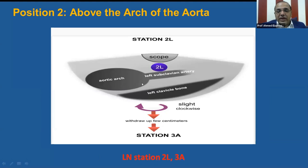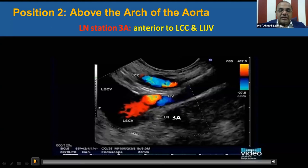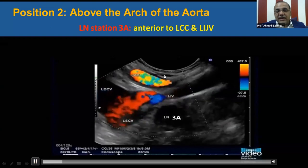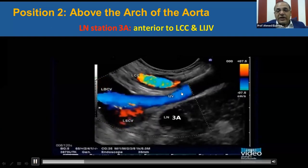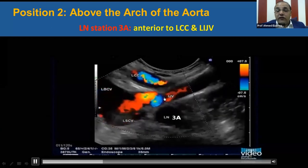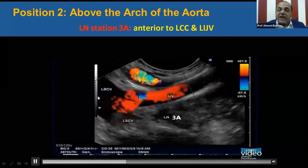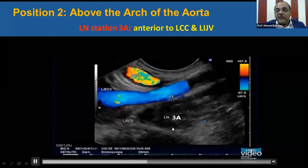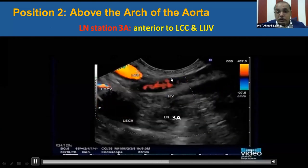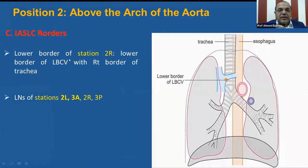With clockwise rotation and withdrawal of the echoscope a few centimeters, we find the left common carotid artery from the left subclavian artery, so we swing from station 2L to station 3A. As seen in this video, this is the left common carotid artery. In front of it is the venous confluence — left internal jugular vein joining the left subclavian vein forming the left brachiocephalic vein — and lymph node station 3A lies in front of the left internal jugular vein and the left common carotid. So position 2 includes lymph node station 2L and 3A examined by EOS, while 2R and 3B are not examined by EOS.